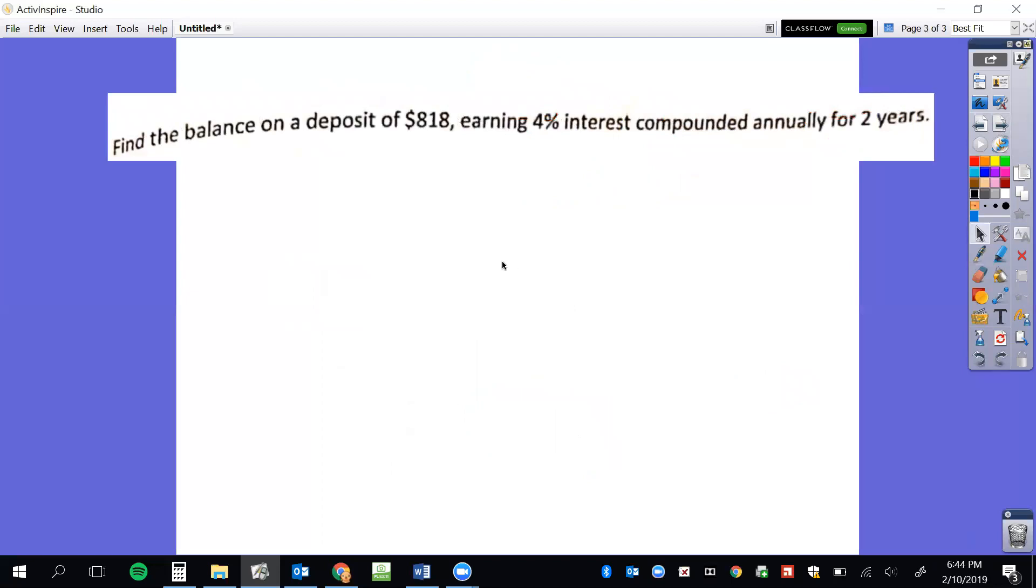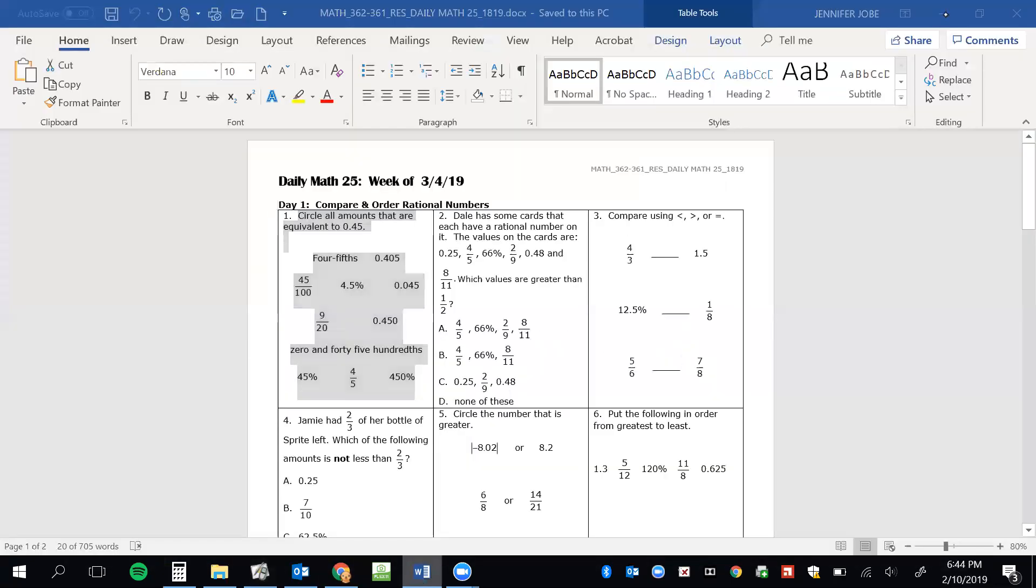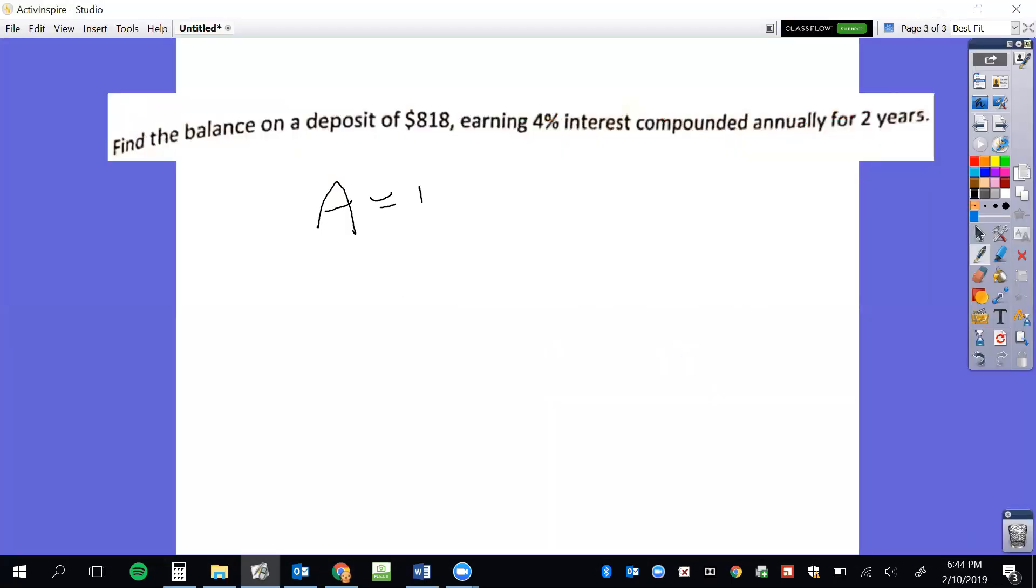Now the next type of problem is compound interest. Again, we're still going to use the same formula that was given to us. So let's go ahead and write it down. My formula is A equals P times 1 plus R to the exponent of time.